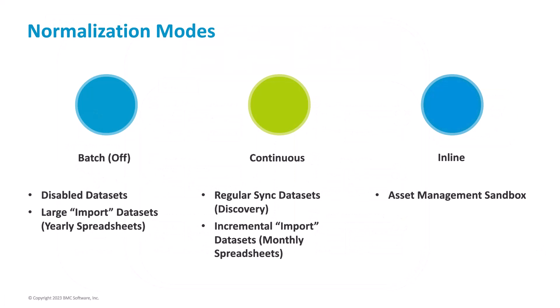There are three modes of normalization. First is batch mode — CIs are normalized after they are saved in CMDB based on a schedule for a dataset. Batch normalization is typically used for large datasets like a yearly spreadsheet. Second is continuous normalization — CIs are normalized after they are saved based on changes to the CIs. This mode should be used for regular sync datasets like discovery or incremental datasets like a monthly spreadsheet.